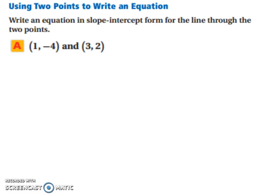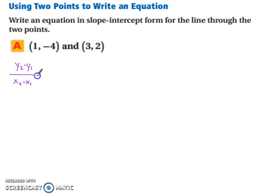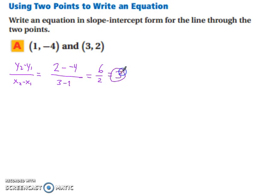Now let's look at using two points to write an equation. When given two points, start by finding the slope using the slope formula: change in y over change in x. So we have 2 minus negative 4 over 3 minus 1. Simplifying gives us 6/2, which reduces to 3. So our slope m equals 3.